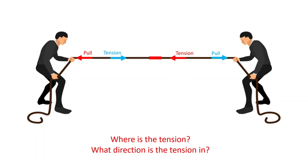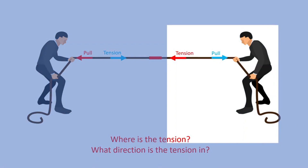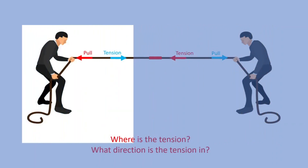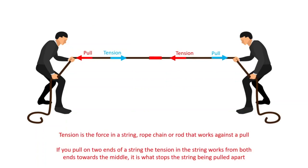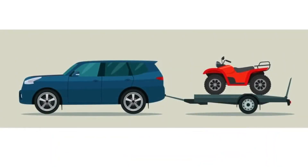When producing a model in mechanics, we focus on just one object at a time. For the right-hand twin, we consider only their pull force and the tension reaction force. For the left-hand twin, similarly just those two forces. To summarize: tension is the force in a string, rope, chain, or rod that works against a pull.